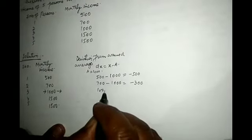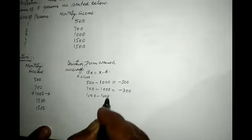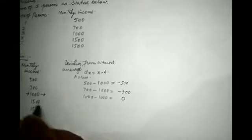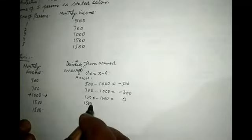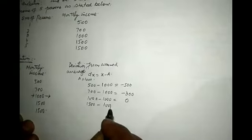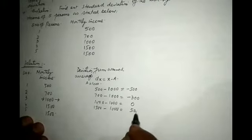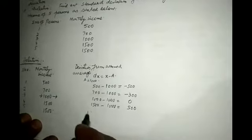1000 minus 1000, this will be equal to 0. 1500 minus 1000, this will be equal to 500.